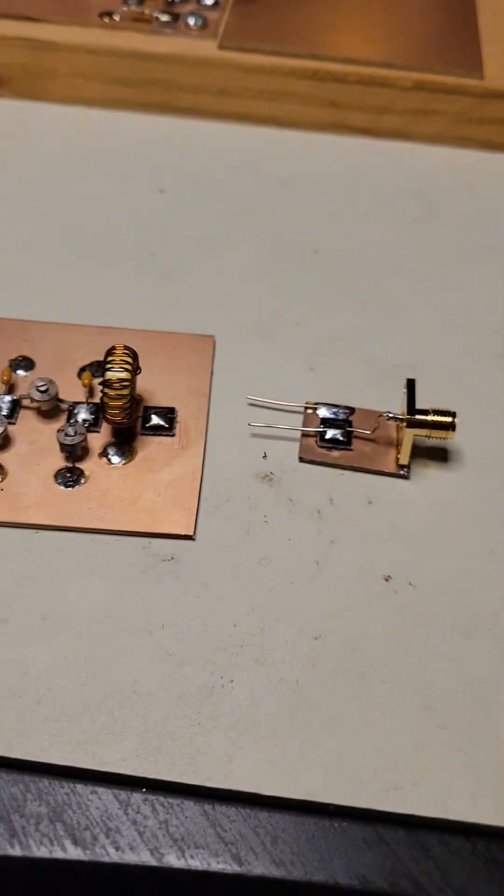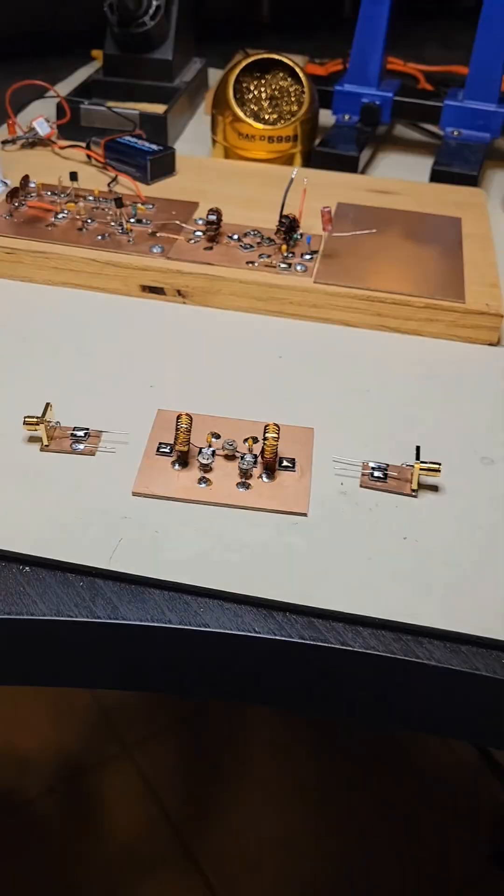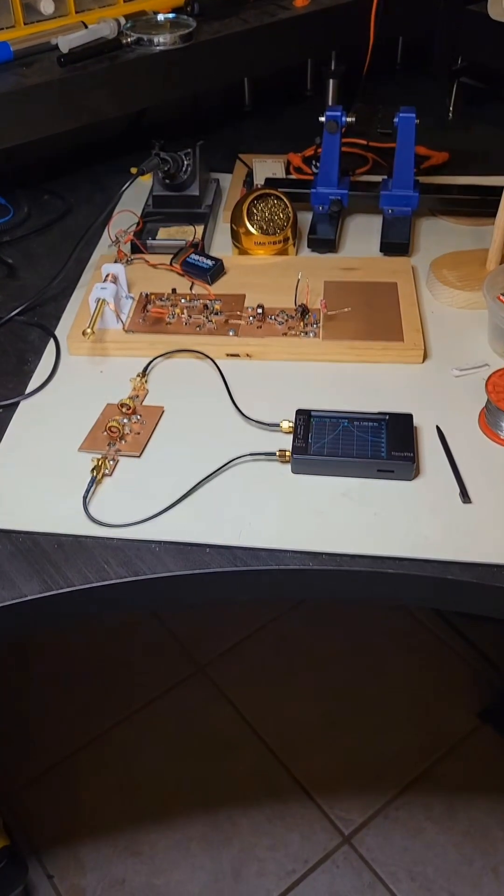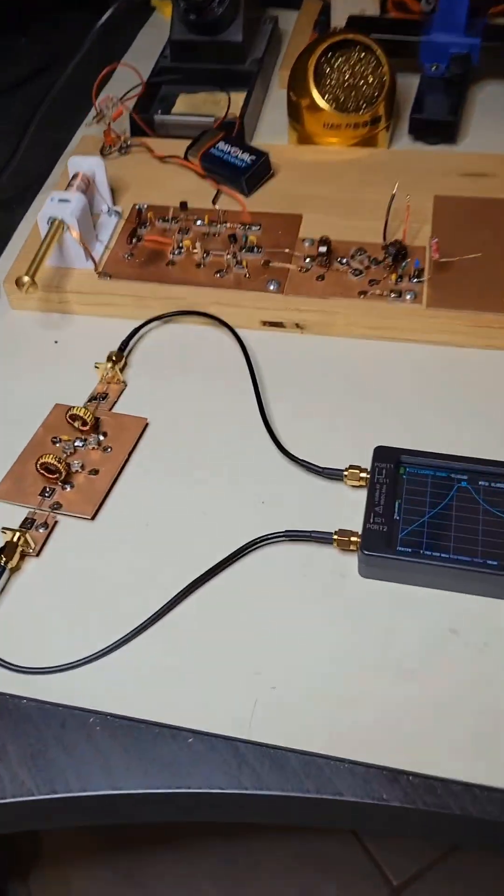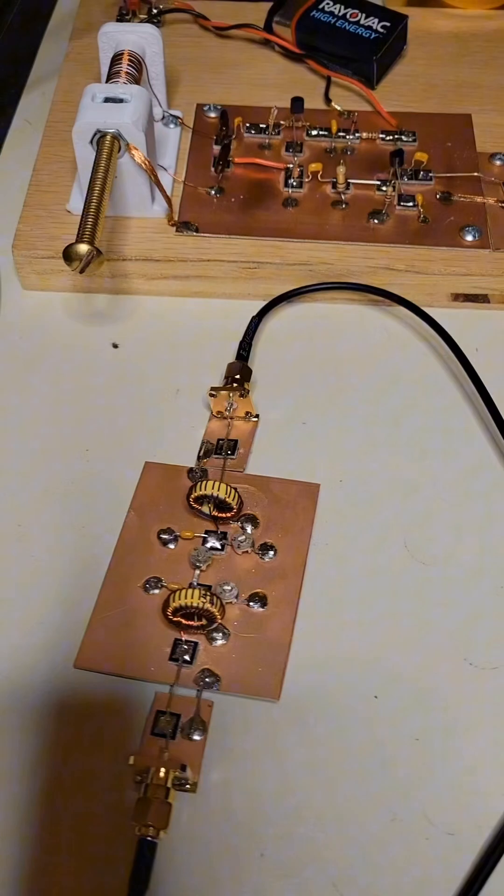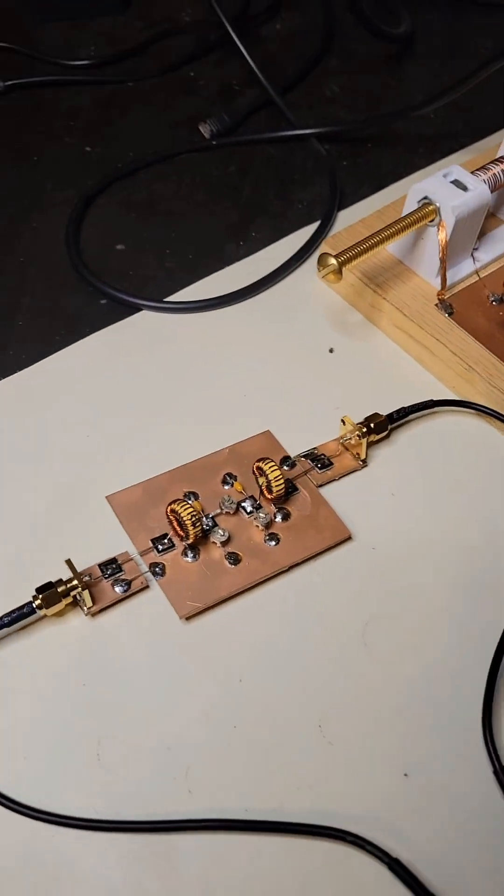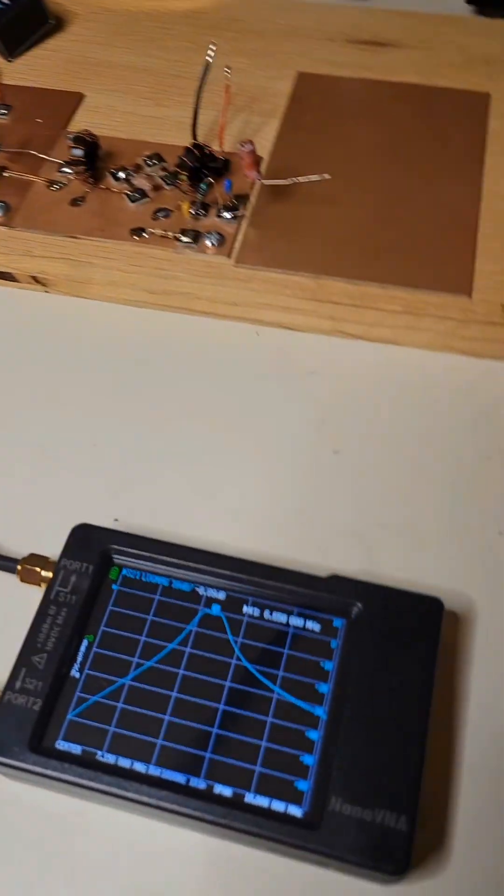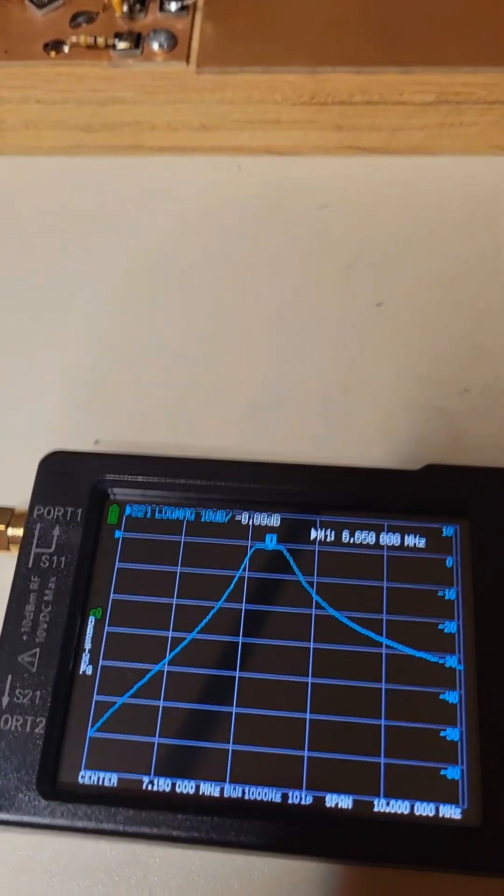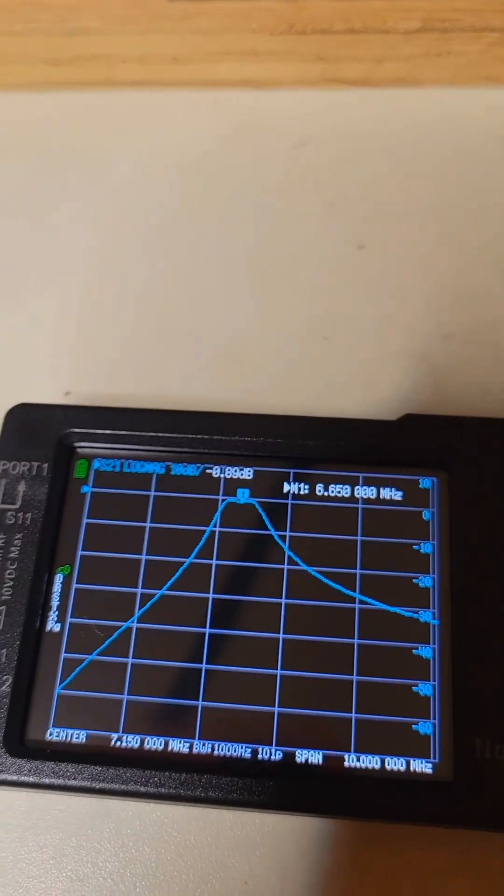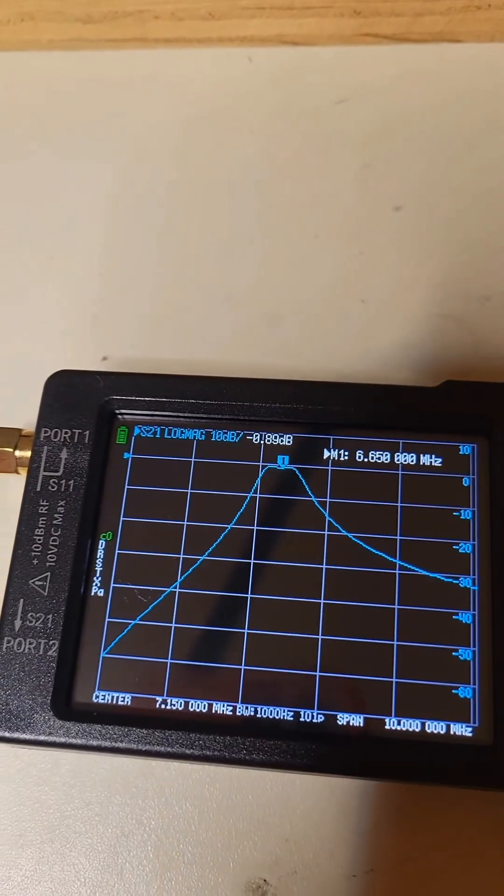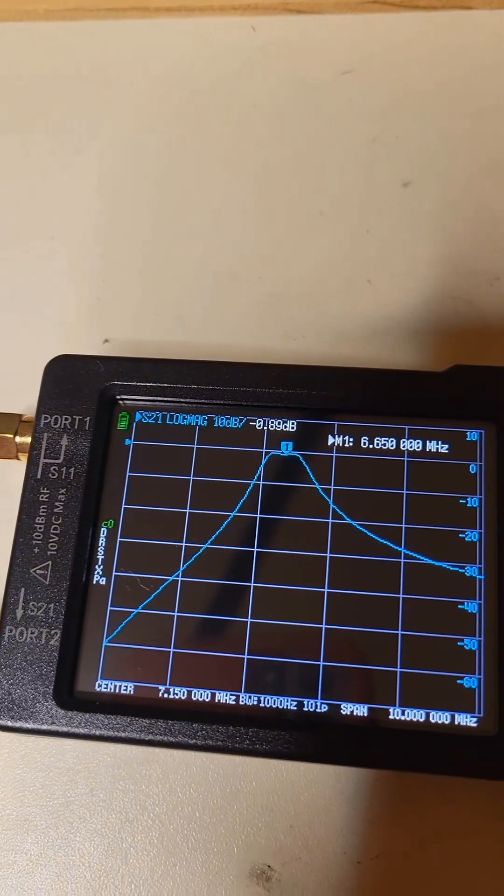I'll solder both of them to the filter, and then I'll connect the filter with those attachments to the Nano VNA. After connecting to the Nano VNA, I get my first readings here, and you'll notice that it shows an attenuation of negative 0.89 dB centered around 6.65 MHz, so we're off a little bit, and I need to do a little bit of tuning.